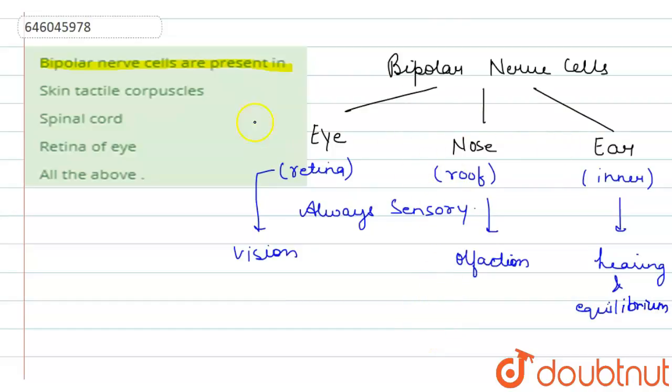Now where it is all found, so in eye as we discussed, it's found in the retina, right? So the bipolar nerve cells form the middle layer of the retina in the eye.